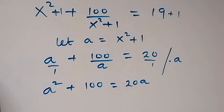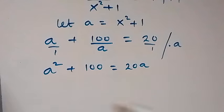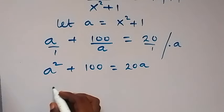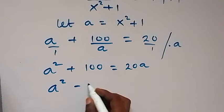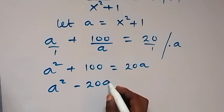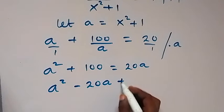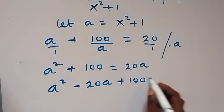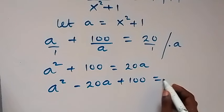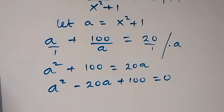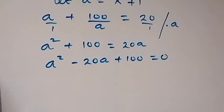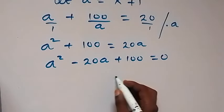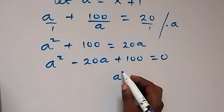We can take 20a to this side, giving us the equation a squared minus 20a plus 100 equals 0.